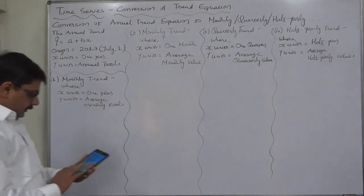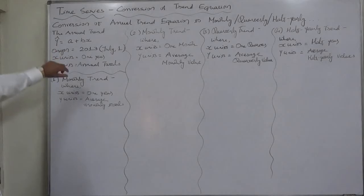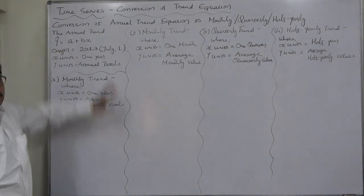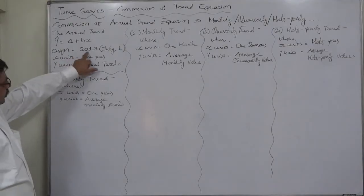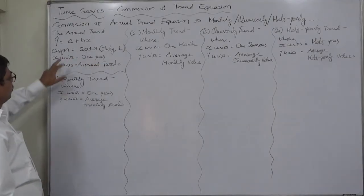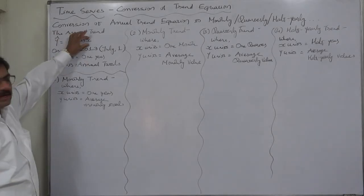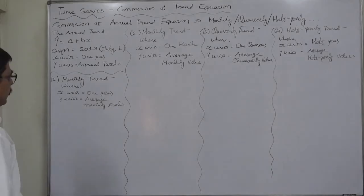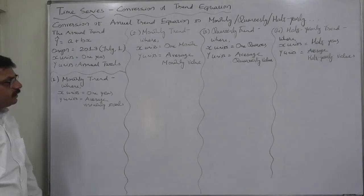The annual trend is suppose y estimated equals to a plus bx, a linear time having origin in 2013 on July 1. In this trend equation, x units are one year and y units are annual totals.